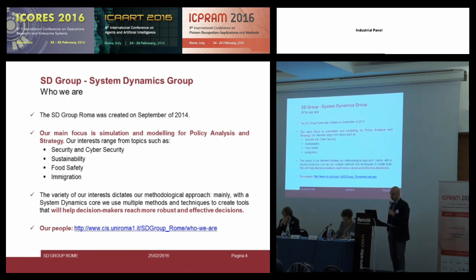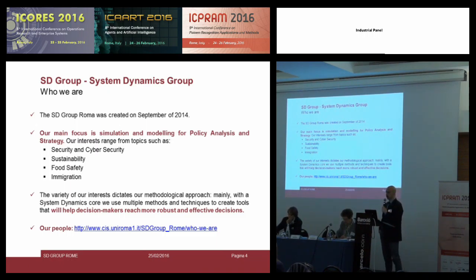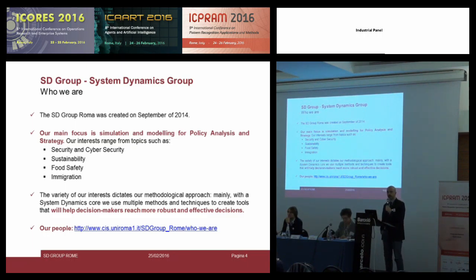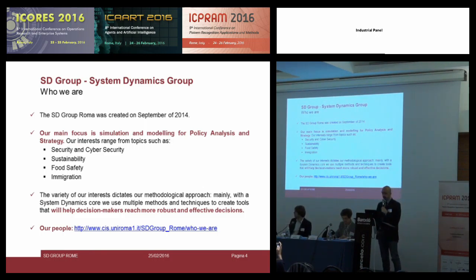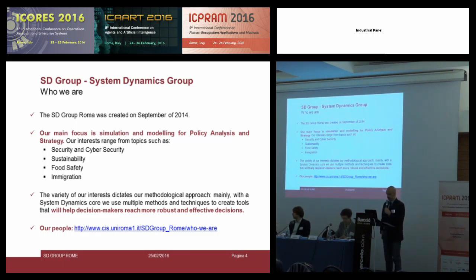I am part of the System Dynamics Group in Rome. System Dynamics is a methodology that was created by Jay Forrester at MIT in the late 60s. As many of you probably know, it was implemented in the first very interesting model by the Club of Rome — the Limits to Growth — probably you are aware of this brilliant book published by the Club of Rome thanks to the activity of the System Dynamics Group at MIT. But the first book was published by Forrester and was called Industrial Dynamics.